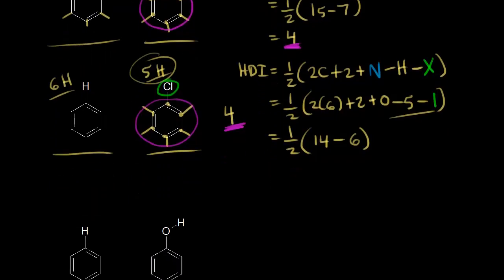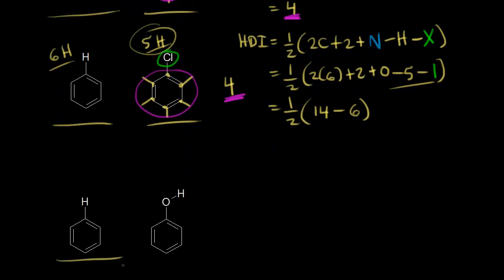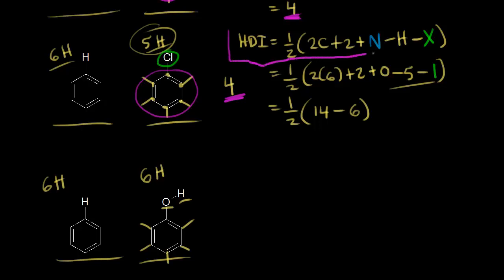Let's look at one more example — benzene versus phenol, where we've added in an oxygen. Benzene has six hydrogens; phenol still has six hydrogens. Even though we've added in an oxygen, there's no change in the number of hydrogens, so we don't need to modify our formula for the hydrogen deficiency index when oxygen is present. This is our final version for calculating the HDI. Sometimes you can just think about how many hydrogens are missing, but using this formula allows you to calculate the HDI and think about what's present in the structure of your molecule.